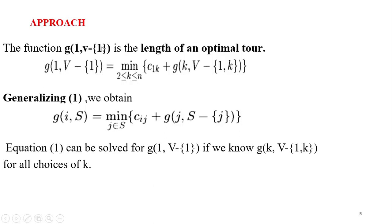You need to visit all the remaining cities exactly once. The function equals the minimum over k from 2 to n of c(1,k) — the cost from city one to city k — plus g(k), where k varies from two to n. You visit the kth city and the cost involved to reach it from city one is c(1,k) from the cost matrix.